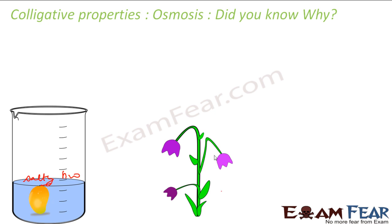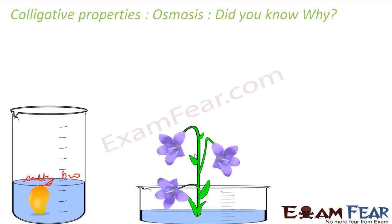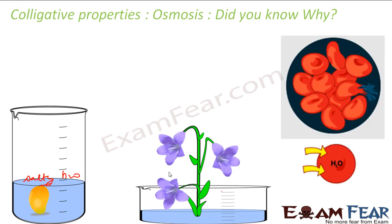You take this wilted flower — it's not a very fresh flower. You put it in water for some time and after some time the flower revives; it becomes fresh again. These red blood cells, if you put them in a salty solution, they collapse. Why does it happen? This is all because of osmosis.